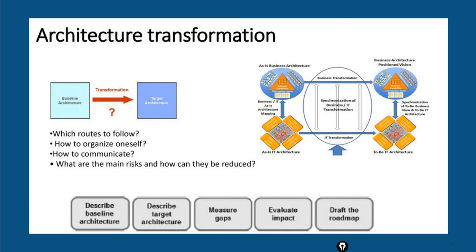We will be talking throughout the course about these four domains or types of architecture. During an architecture transformation, we move from the baseline architecture to the target architecture. Enterprise architecture helps us identify which routes to follow, how to organize, how to communicate, and where the gaps are. We define the baseline architecture, describe the target architecture, measure the gaps, evaluate the impact, and draft the roadmap — moving from the as-is business architecture to the to-be IT architecture.